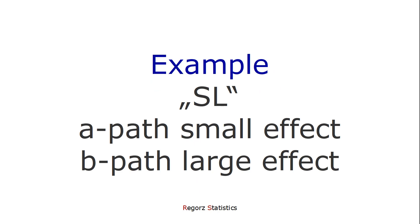For example, you want a small effect in the a path and a large effect in the b path. Then you look in the column SL and look up the value for your mediation analysis technique. And that's it. A link to the paper is in the description of this video.